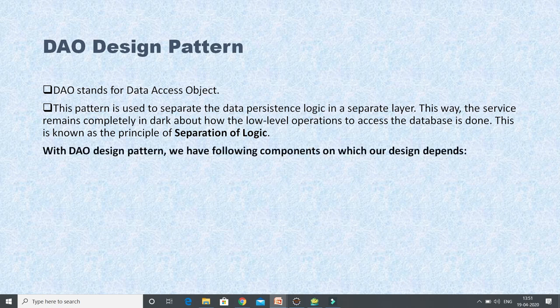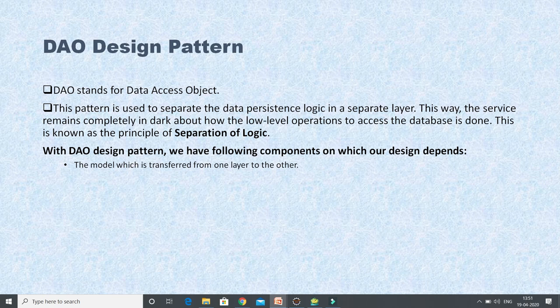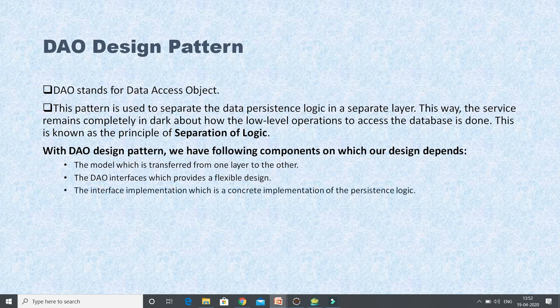With the DAO design pattern, we have the following components on which the design pattern depends. First, we have a model class, which is transferred from one layer to another layer. We may need to read data from the database, populate it into the model object, and that model object may be transferred from one layer to another. Next, we have DAO interfaces which provide a flexible design. Rather than coding for a concrete implementation, we code for interfaces so we can take advantage of polymorphism. Then there is the interface implementation, which is the concrete implementation of the persistence logic.